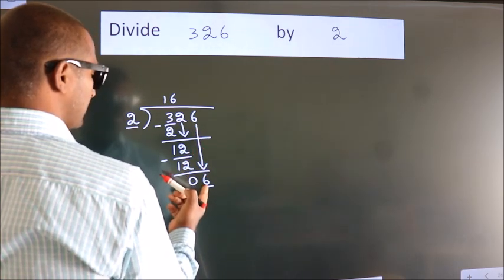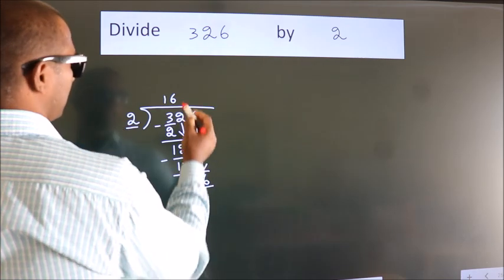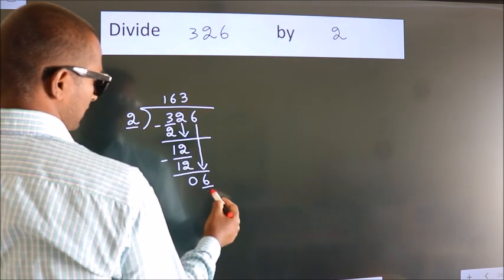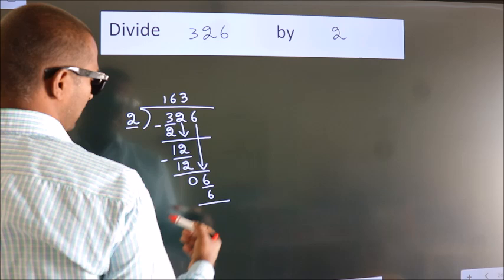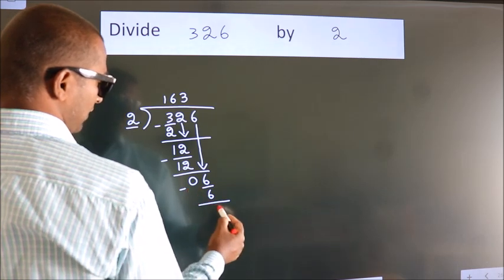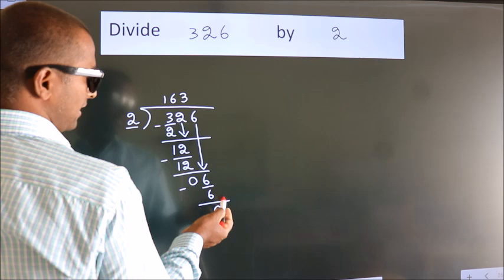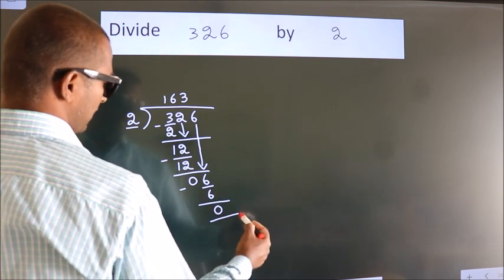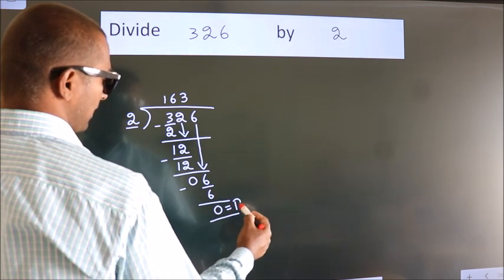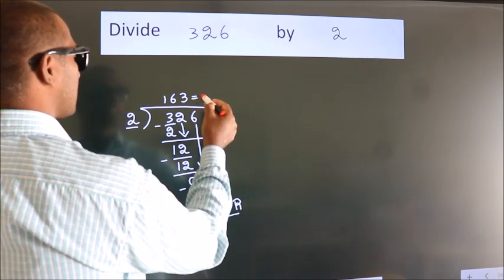When do we get 6? In the 2 table, 2 threes are 6. Now we subtract. We get 0. No more numbers to bring down, so we stop here. This is our remainder. This is our quotient.